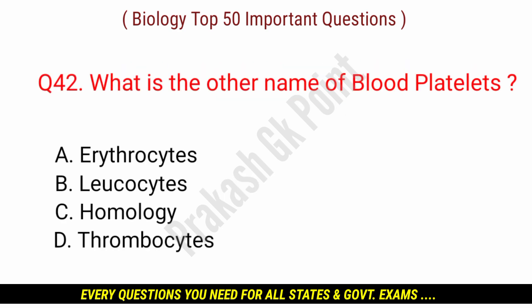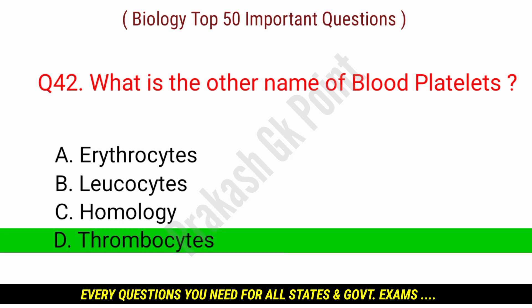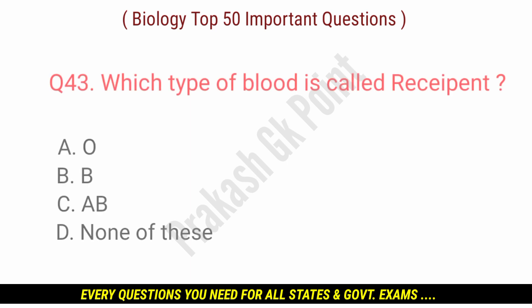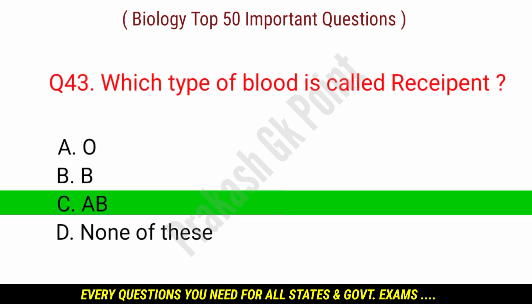What is the other name of blood platelets? Answer: option D — Thrombocytes. Which type of blood is called universal recipient? Answer: option C — AB type.